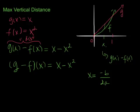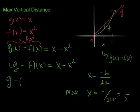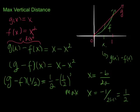So I can use this to find my maximum value. The max will occur when x is equivalent to, and my b value is 1. This is my x to the first term. So it will be negative 1 divided by 2a. And a is negative 1, so I have 2 times negative 1. And this is just going to be a negative over a negative, which is a positive, 1 half. So the maximum value will occur when x is 1 half. So g minus f of 1 half will give me 1 half minus 1 half squared. And that's 1 half minus 1 fourth, which is 1 half. So the maximum vertical distance is 1 half.